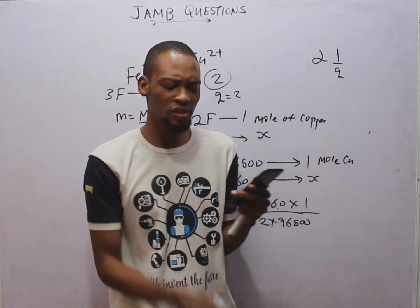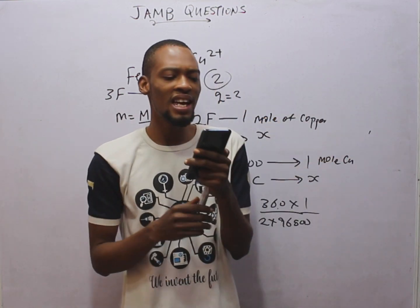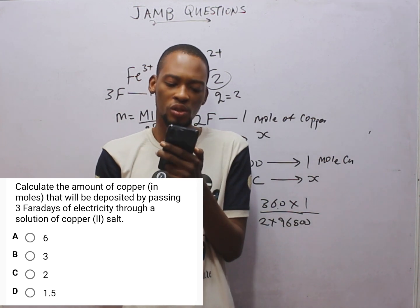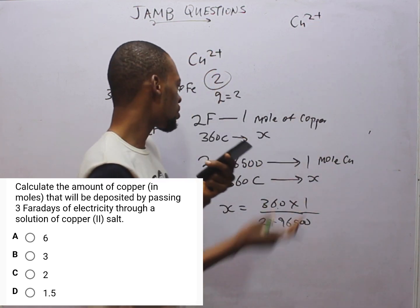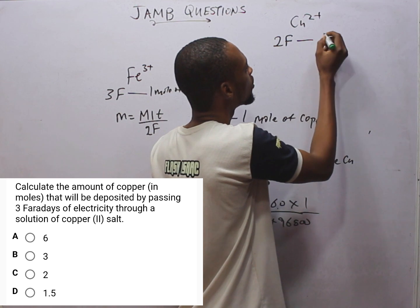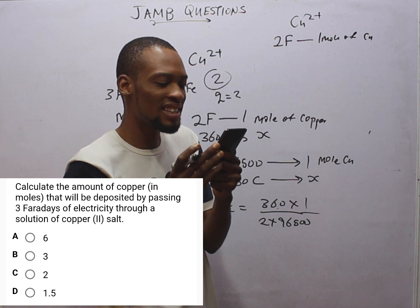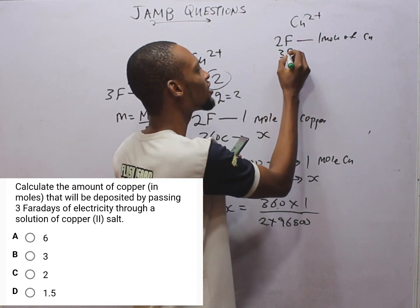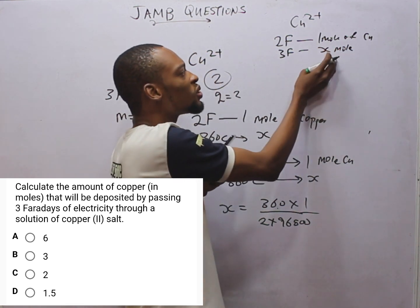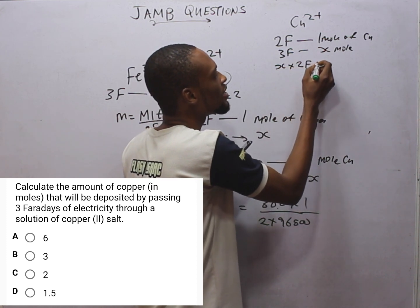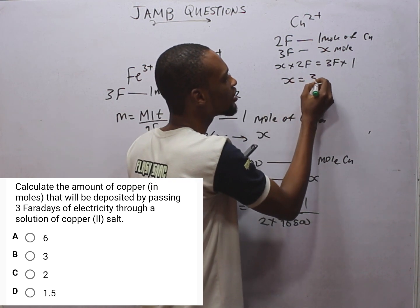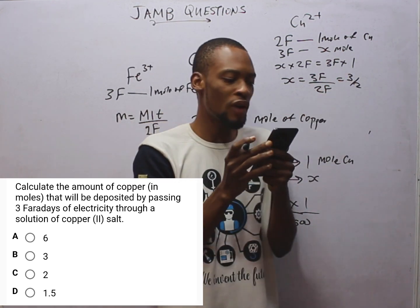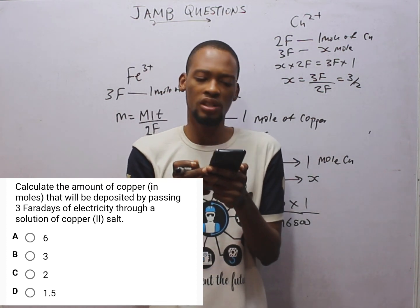This is a similar question that requires reasoning. It says: calculate the amount of copper in moles that will be deposited by passing 3F of electricity through a solution of copper(II) salt. We know copper is Cu²⁺, so naturally we need 2F to deposit 1 mole of copper. The question asks how many moles are deposited by 3F. So: 2F deposits 1 mol; 3F deposits S mol. Cross-multiplying: S = 3F × 1 / 2F = 3/2 = 1.5 mol. That is option D.